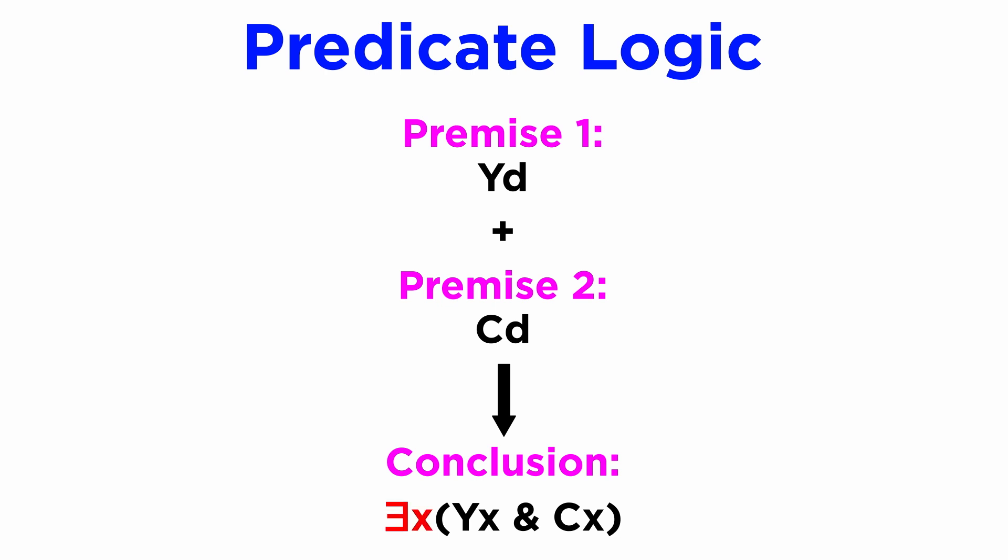We can represent this with first-order symbols as follows, as the first two sentences affirm there is at least one person, in this case me, Dave, who is both a YouTuber and explains chemistry, but there could be more, contrary to an exclusive particular affirmation which would limit the entire universe of people who could be both to just myself.